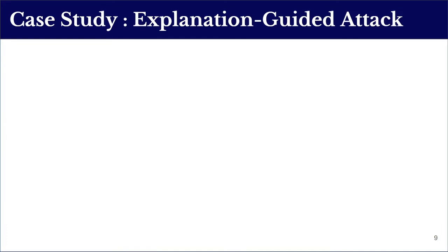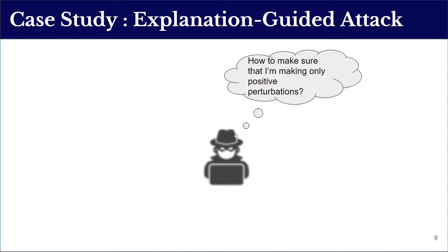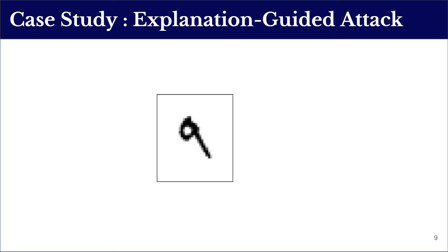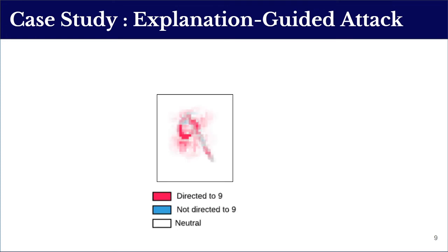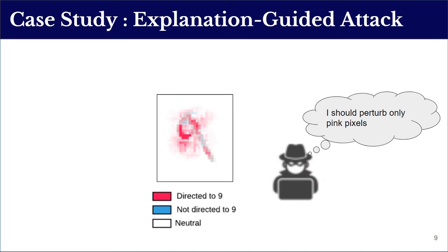The previously reported results indicate that perturbations at the feature level might not always be in line with the adversary's goal. To improve its perturbation strategy, an adversary can explore the feature directions that led to the correct classification, then apply perturbation only to features originally causing the correct classification — the pink pixels in this case. The outcome would be not only fewer negative perturbations but also a lower perturbation size overall.